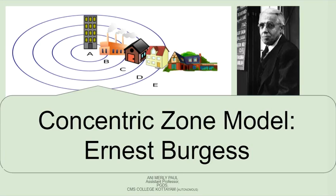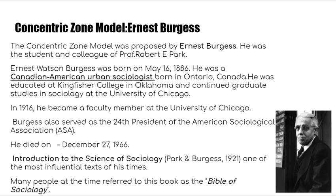Today we'll be learning about the concentric zone model, which was put forward by Ernest Burgess. Burgess was a Canadian-American urban sociologist, born in Canada and educated at Kingfisher College in Oklahoma. He continued graduate studies in sociology at the University of Chicago. He also served as the 24th president of the American Sociological Association and died on December 27th, 1966.